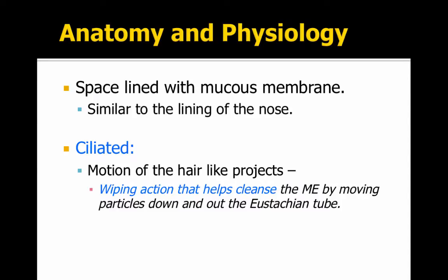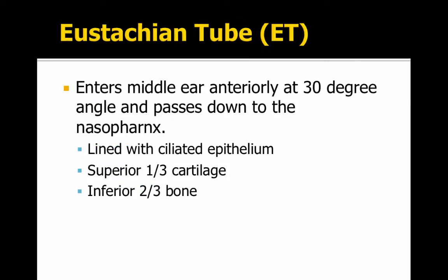The middle ear is lined with a mucous membrane similar to the lining of your nose — it's ciliated. The motion of these hair-like projections creates a wiping action that cleanses the middle ear by moving particles down and out the eustachian tube. The eustachian tube enters the middle ear anteriorly at a 30-degree angle and passes down to the nasopharynx, and it's lined with the same skin that's in your nose.